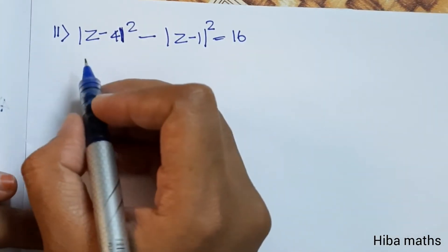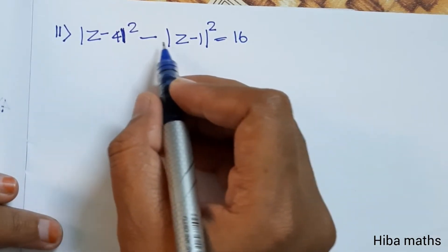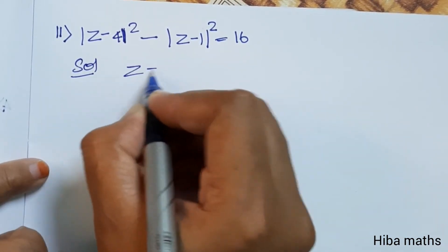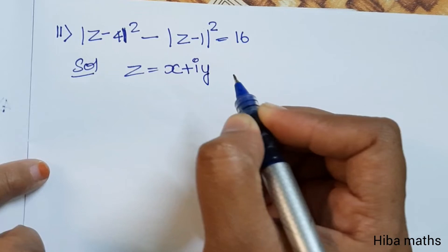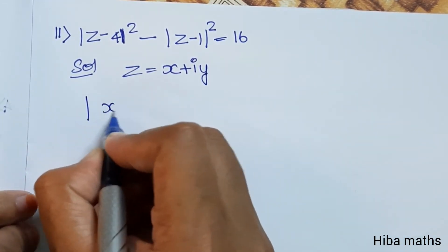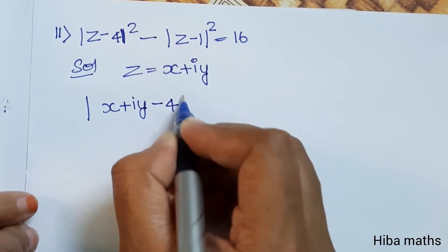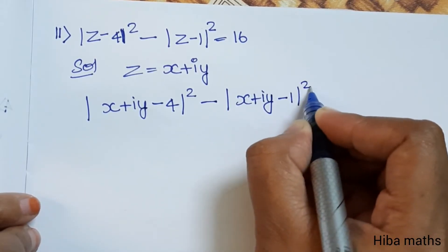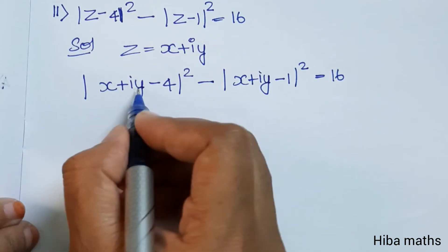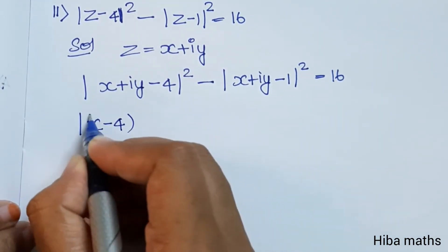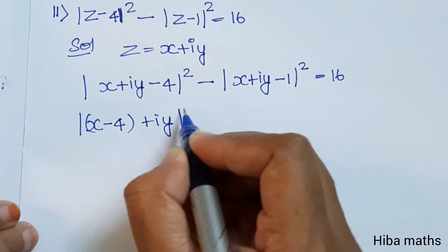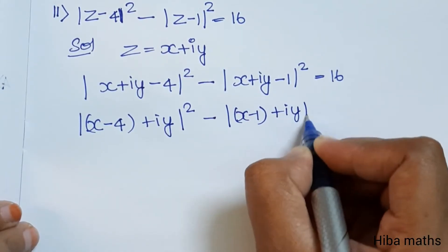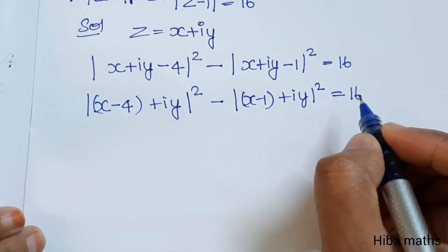Second part: |z - 4|² - |z - 1|² = 16. Substituting z = x + iy, we write |(x - 4) + iy|² - |(x - 1) + iy|² = 16. The real and imaginary parts are separated for each modulus expression.